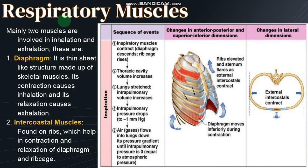The respiratory muscles help us breathe — to inhale and to exhale. Two major muscles are involved: the diaphragm, a thin sheet-like structure made up of skeletal muscles, whose contraction causes inhalation and relaxation causes exhalation; and the intercostal muscles found on the ribs, which help in contraction and relaxation of the diaphragm and the movement of the rib cage up and down.